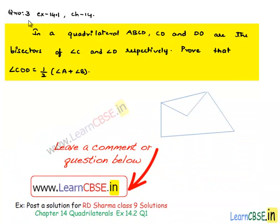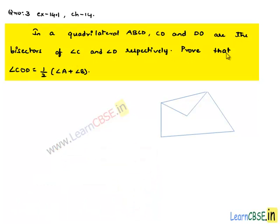Now, let us discuss question number 3, exercise 14.1, chapter 14. In a quadrilateral ABCD, CO and DO are the bisectors of angle C and angle D respectively. Prove that angle COD is equal to half times the sum of angle A and angle B.